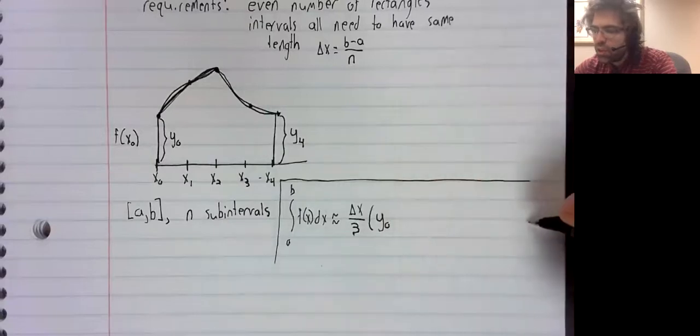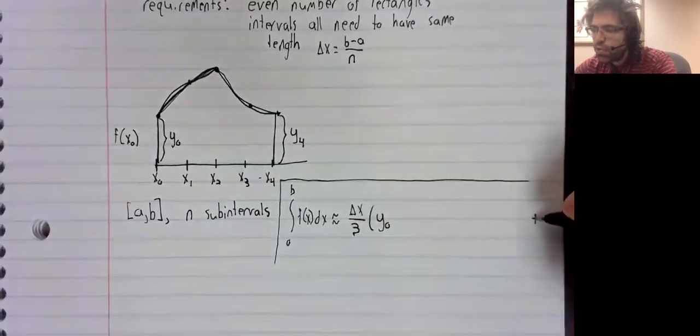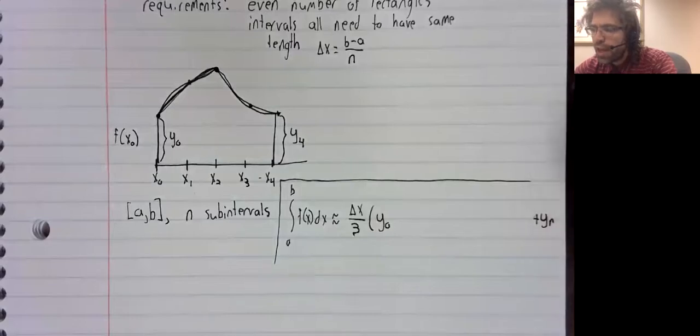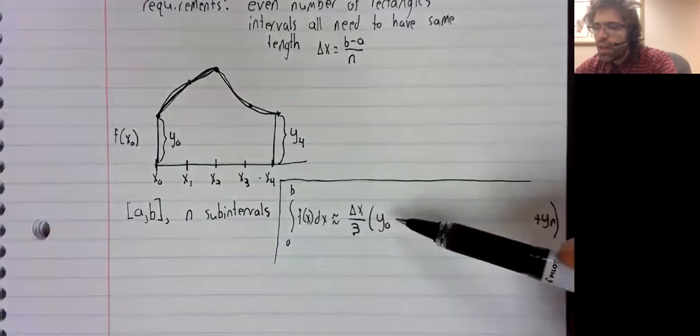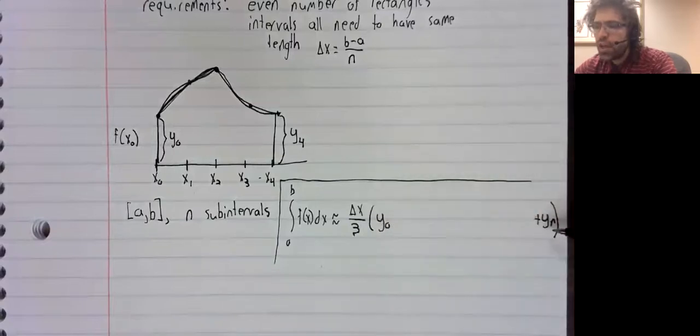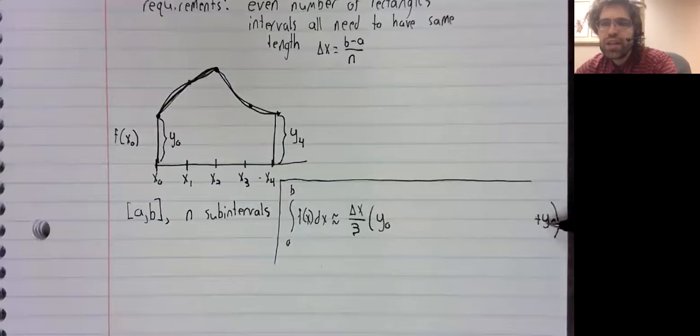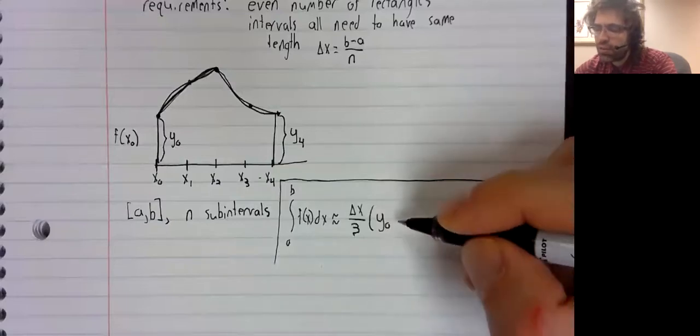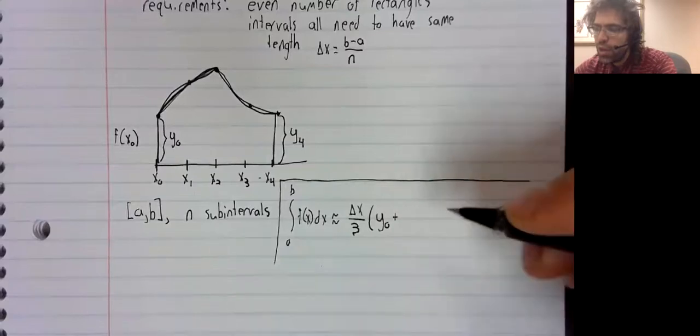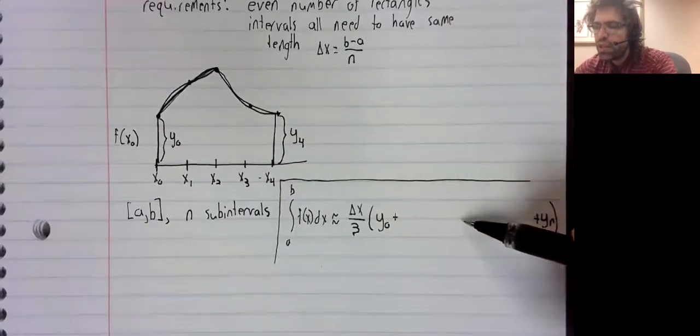And now just as with the trapezoidal rule, we're going to have a sum here, and our first and our last terms are not going to have any numbers in front of them. But all of these terms will.